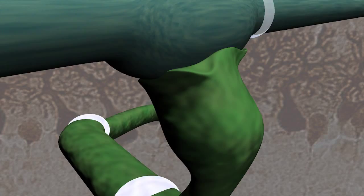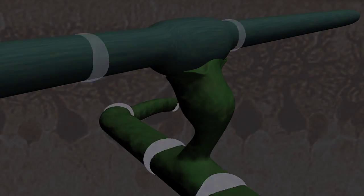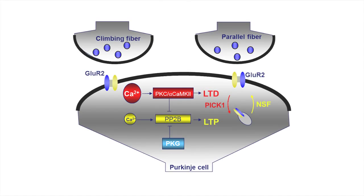So the question is how can we block this process? Long-term potentiation at the parallel fiber to Purkinje cell synapse depends on the phosphatase PP2B, which in effect allows the glutamate receptor subunits to be inserted at the post-synaptic site.